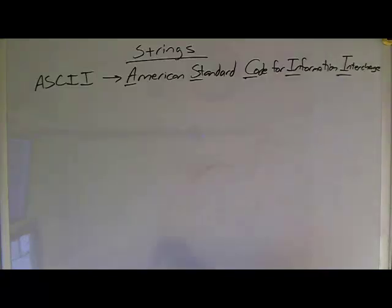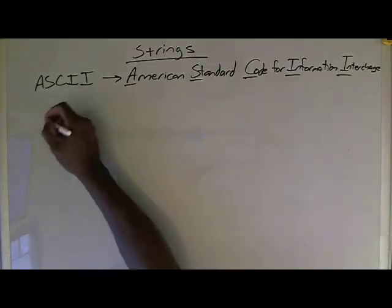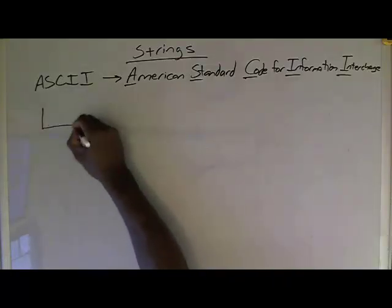The American Standard Code for Information Interchange, which is known as ASCII. And what ASCII does is something that is recognized the world over, and there's also a broader version, which is called Unicode. But what's actually being done is this, and let's break it back down to how the computer works.